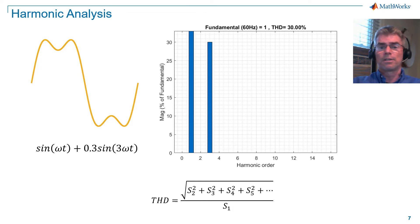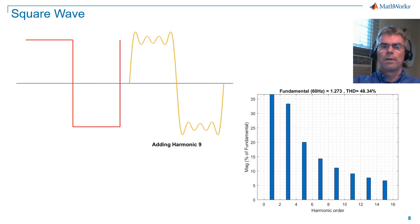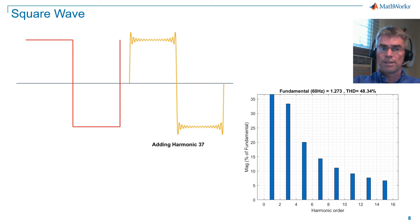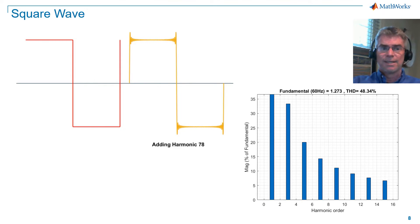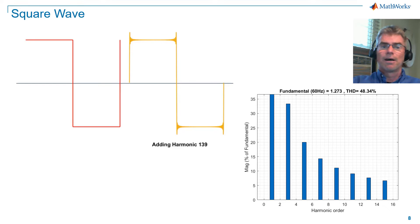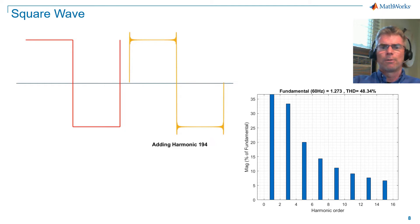We'll now look at some additional distorted waveforms, which are more representative of what we can see on AC electrical systems with power electronics included. We'll start with a square wave. On the top left, I'm showing the square wave and also a reconstruction of the waveform from its harmonic components, as identified in the FFT analysis at the bottom right. Note I'm only showing up to the 16th harmonic on the FFT for clarity. It's seen that a square wave is made up of odd harmonics — 3, 5, 7, 9, etc. — and has a total harmonic distortion of 48.34%. In the visualization, I'm adding the harmonics one at a time. Note that I can't extend the harmonic addition to infinity, so you're not going to see a perfect match, but I'm adding enough such that you can see the basic waveform construction.